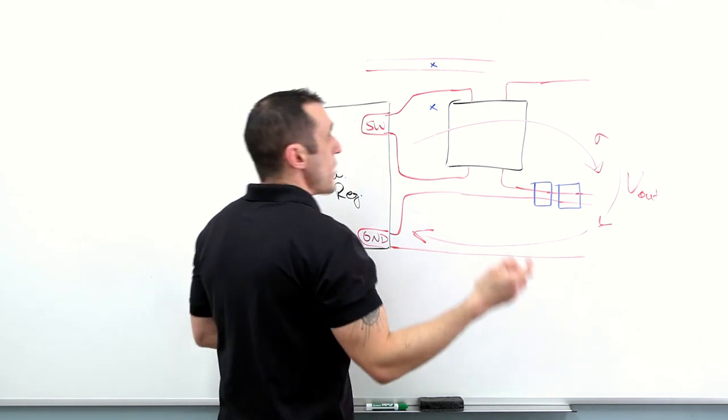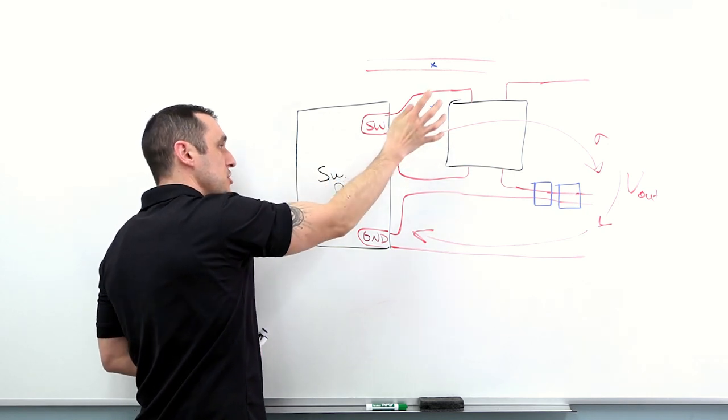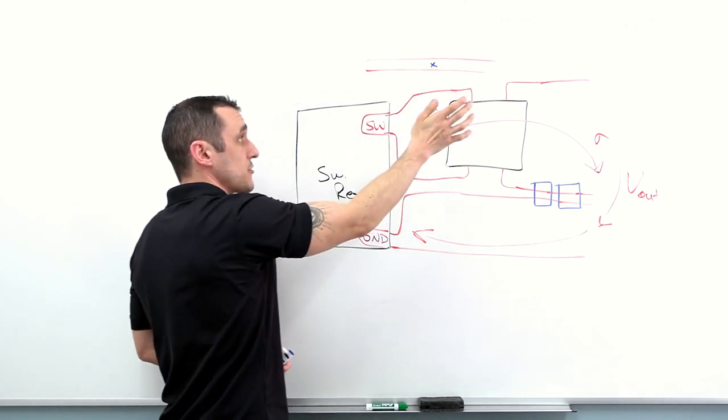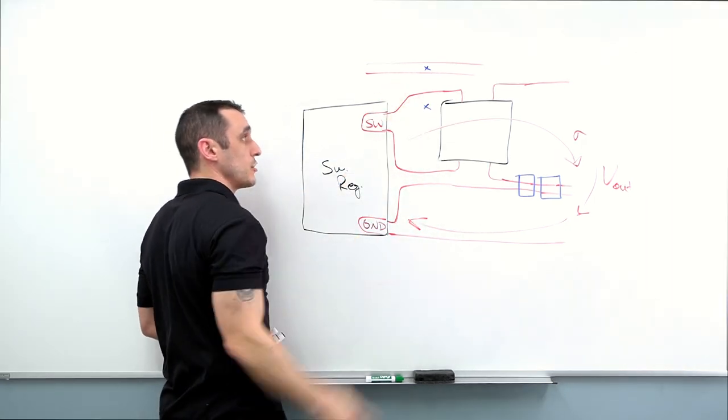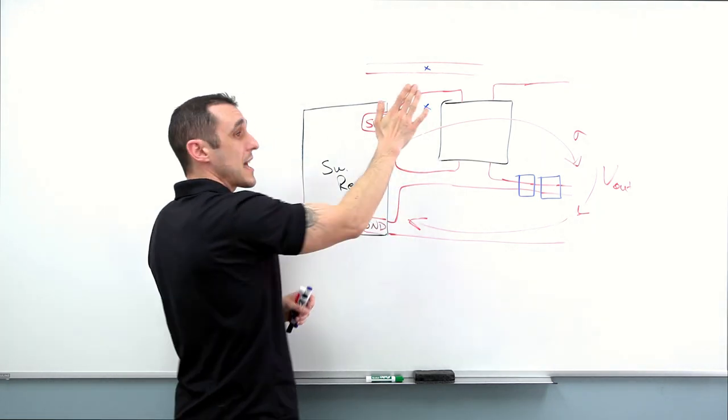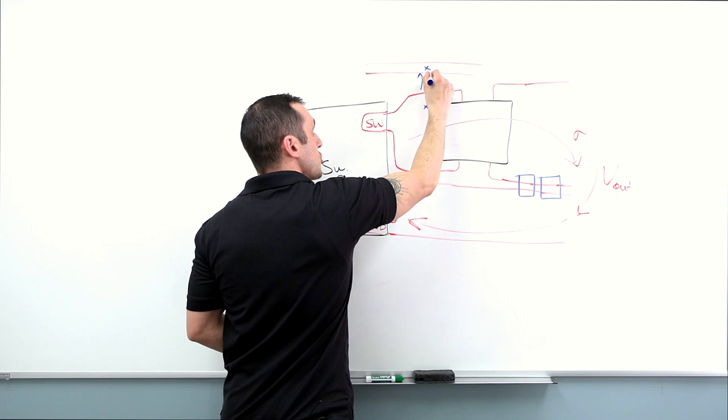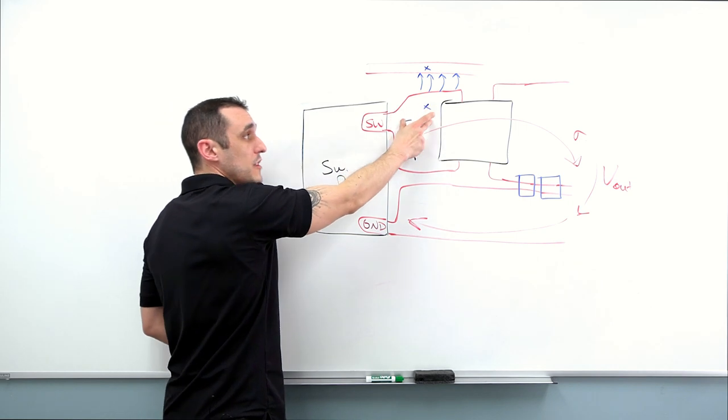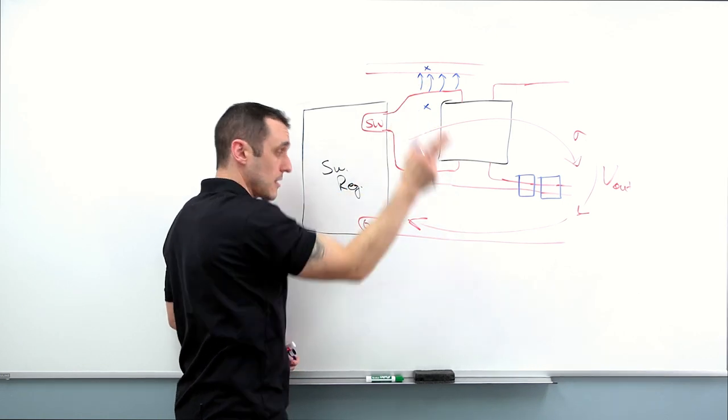If for whatever reason you happen to have a piece of copper coming along here that is capacitively coupled to the switching node, then what you need to do is you could also reduce the distance from the ground plane that's on the next layer. Ideally it should be on the next layer to the switching node here and to this section of copper. So if you've got ground on the next layer, then you can bring that in a little bit closer. And essentially what that does is it reduces the electric field strength between these two sections of copper. And so what I mean by that is it actually causes the electric field being generated from this conductor to be more strongly confined between the conductor and the substrate.